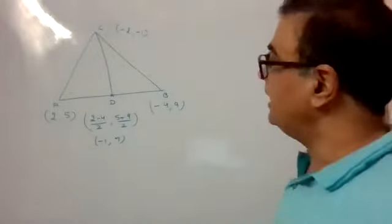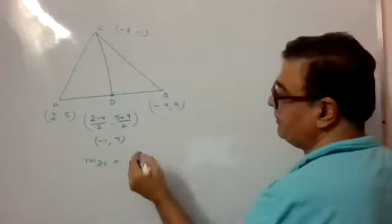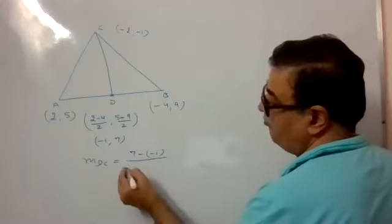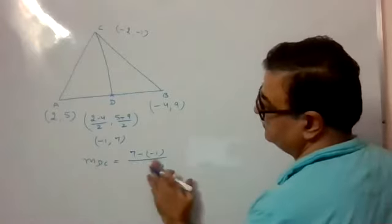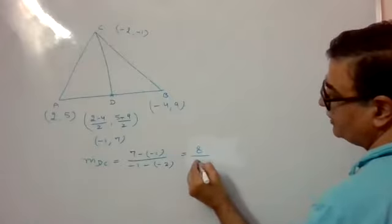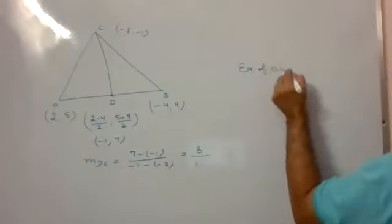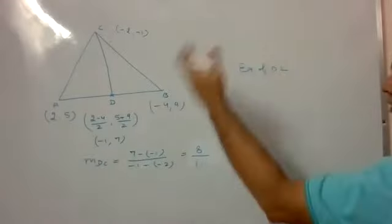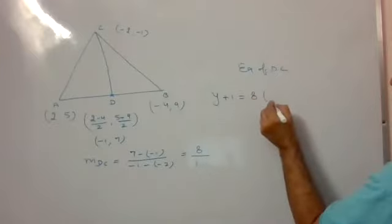Now find the slope of DC: (7 minus (-1)) divided by (-1 minus (-2)) = 8 over 1 = 8. So the equation of DC: y minus (-1) = 8(x minus (-2)), giving y plus 1 = 8(x plus 2).